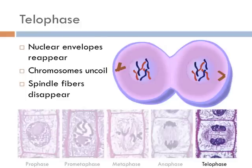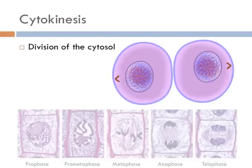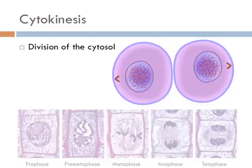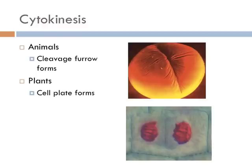Cytokinesis is the final stage of cell division, and it's technically not a part of mitosis because mitosis just involves the division of the chromosomes. Cytokinesis is the division of the cytosol of a cell after the division of the chromosomes. In animals, cytokinesis forms a structure known as a cleavage furrow, and in plants, a structure is formed known as a cell plate. The reason they look different is that plants form a cell wall, whereas animals don't. In animals, their phospholipid bilayer cell membranes squeeze together and eventually pinch off — and the pinching off part is called the cleavage furrow.